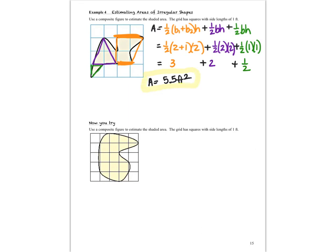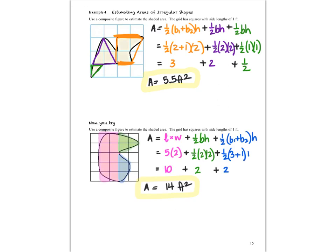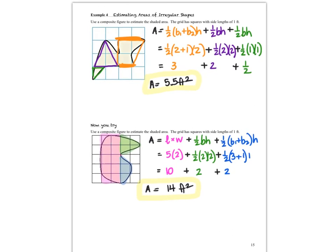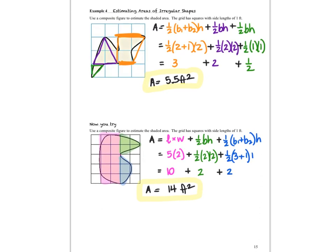There's a Now You Try — turn the video off and back on when you're ready to check your answer. The composite figure can be made up of a rectangle, a triangle, and a trapezoid, or something else — your answer may differ slightly since this is an estimate, but answers should be close. That's it for this lesson. Go back and rewatch anything you're not sure of, make sure your notes are filled out, and when we're back in class we'll work on the practice problems that start on the next page.